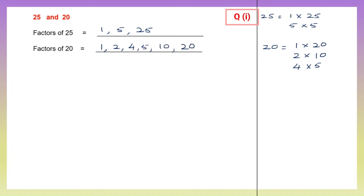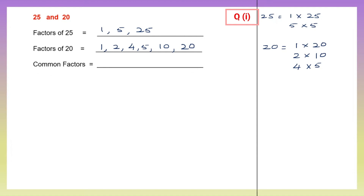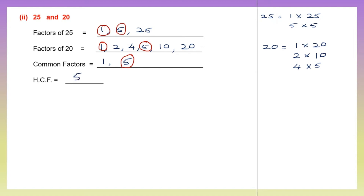So all these are the factors of 20. Now let's pick out the common factors. What is common to both? 1 is common, then 5 is also common. So we have two common factors: 1 and 5. From this we have to pick out the highest common factor. 5 is bigger, so the highest common factor is 5.